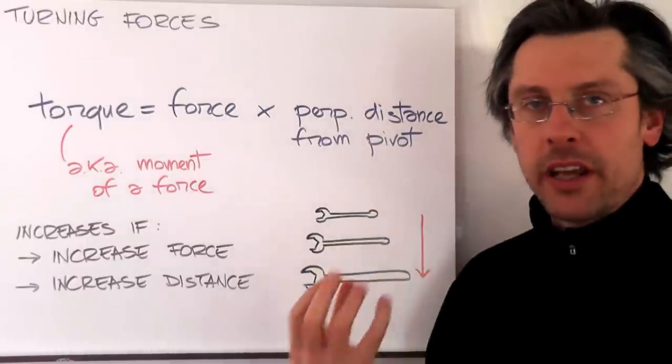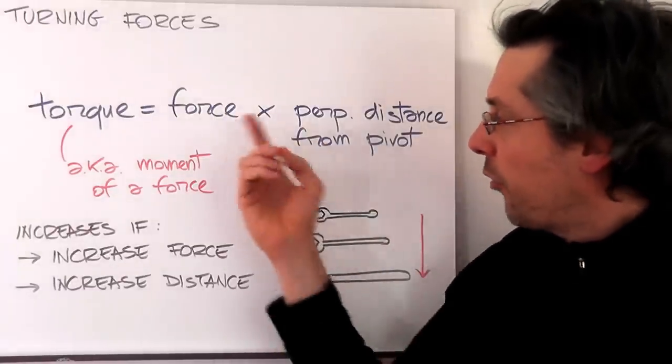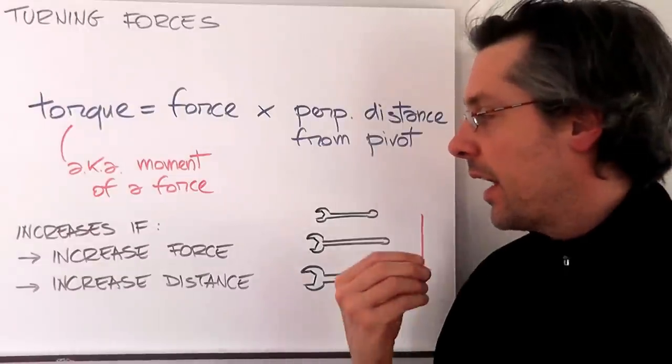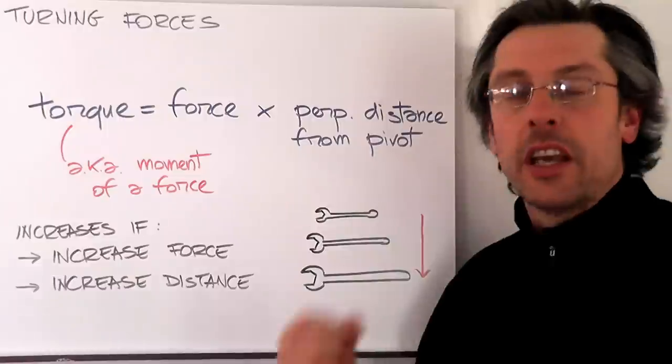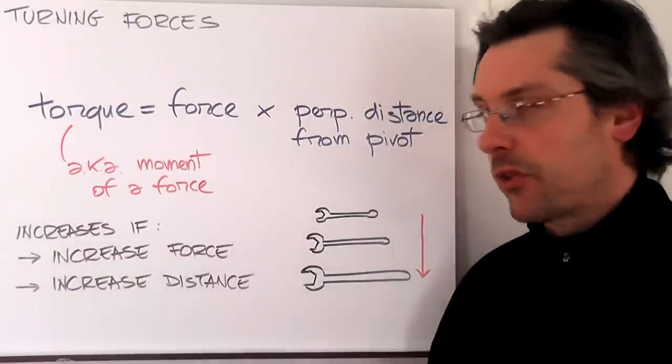So torque is a combination of two factors. One of them is the force, one of them is the distance from the pivot. And it's clear that it will increase if you increase the force but also if you increase the distance from the pivot.